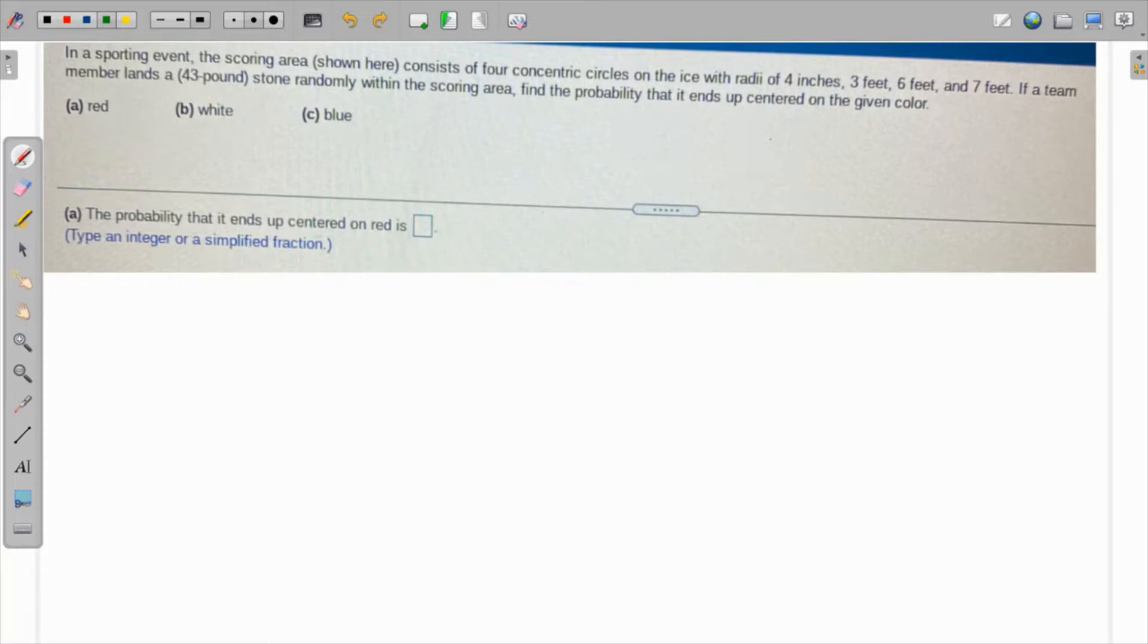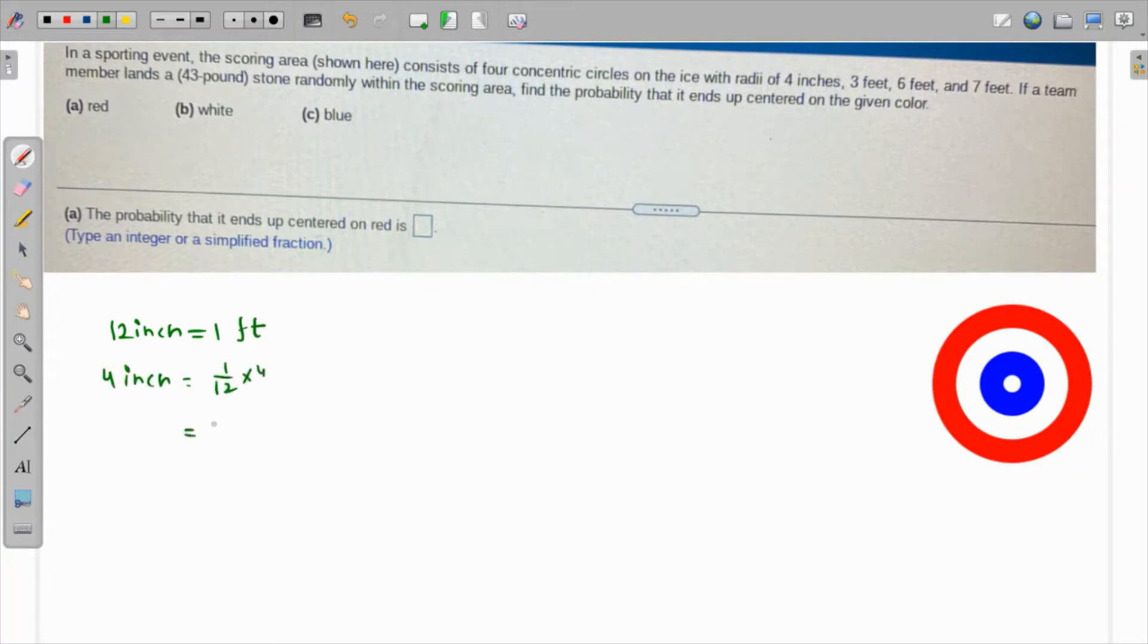This is the scoring area. Now we have to take care of this - 4 inches, not feet. We know that 12 inches is 1 foot. So 4 inches will be equal to 1 over 12 times 4, which is nothing but 1 over 3 feet.